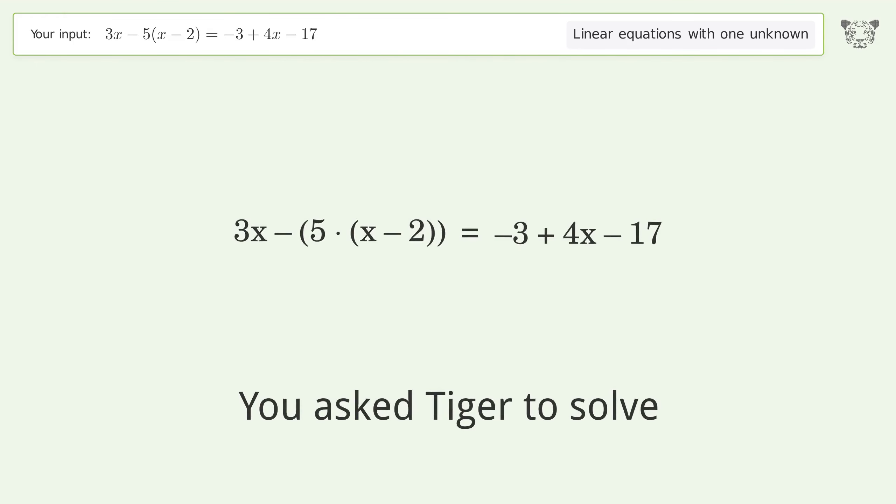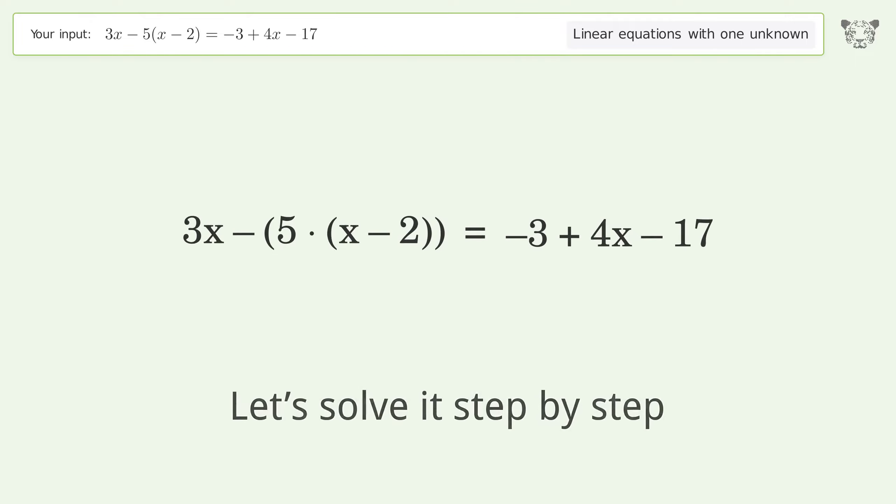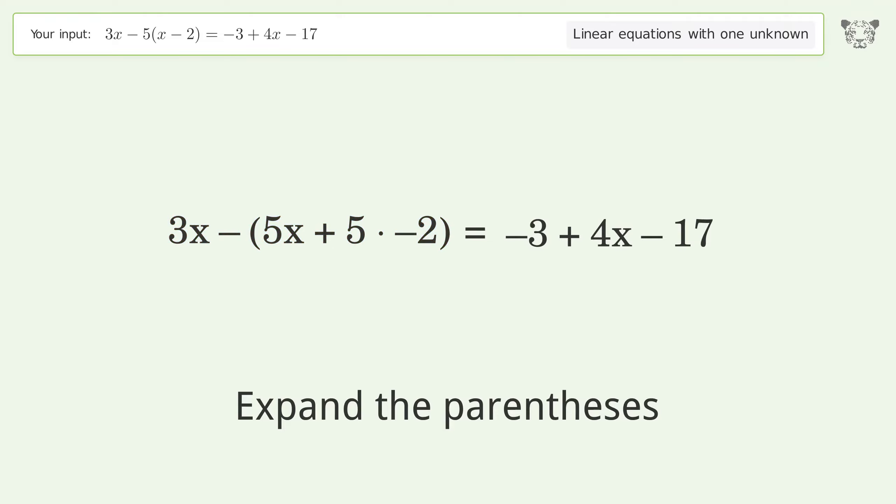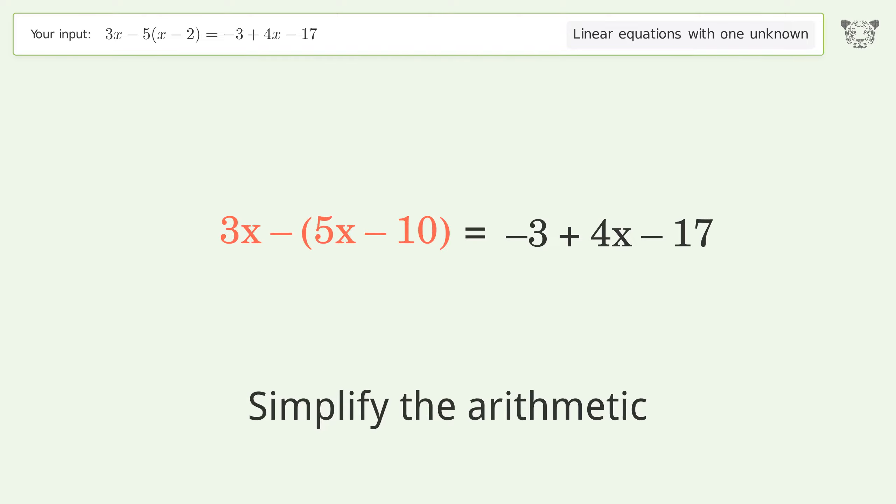You asked Tiger to solve this, which deals with linear equations with one unknown. The final result is x equals 5. Let's solve it step by step. Simplify the expression, expand the parentheses, simplify the arithmetic, expand the parentheses.